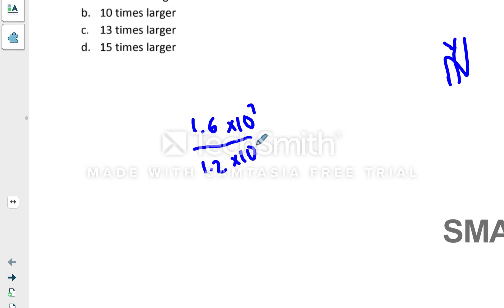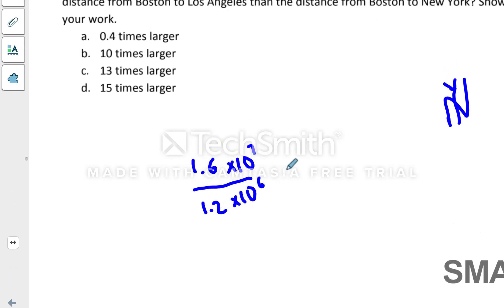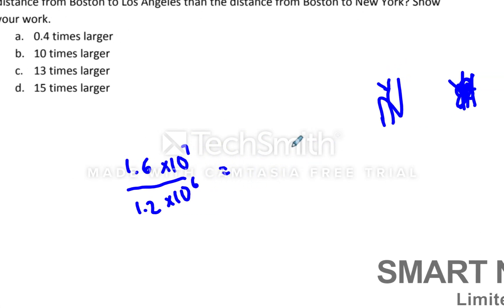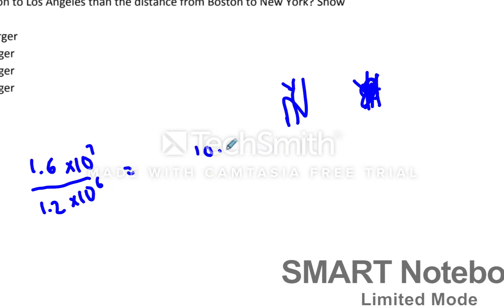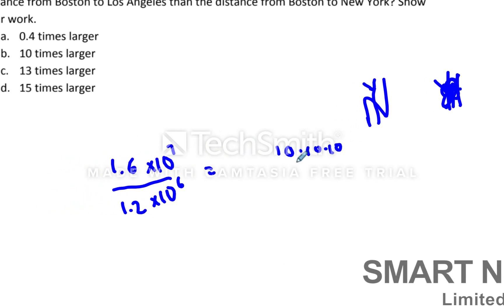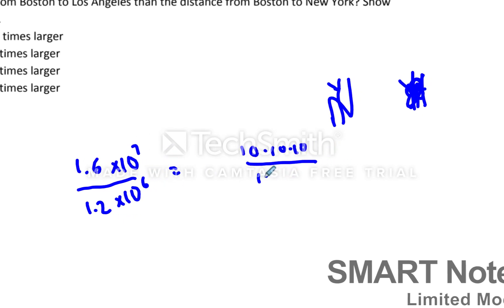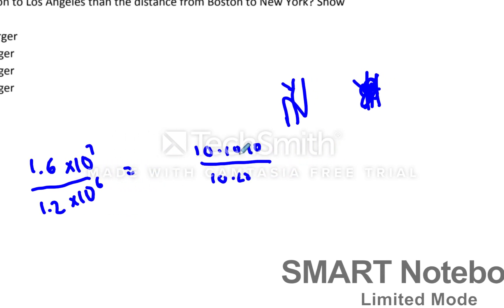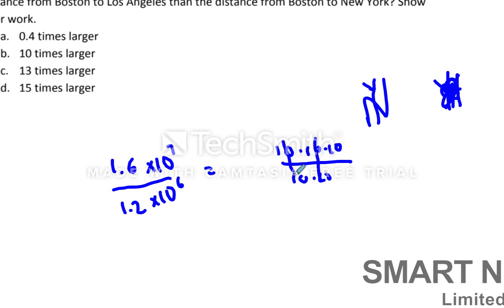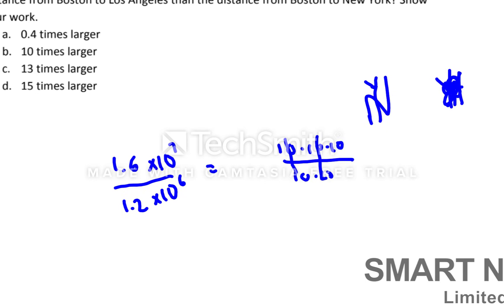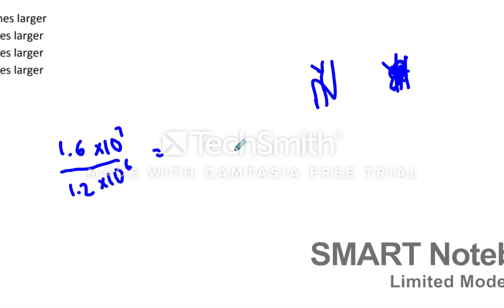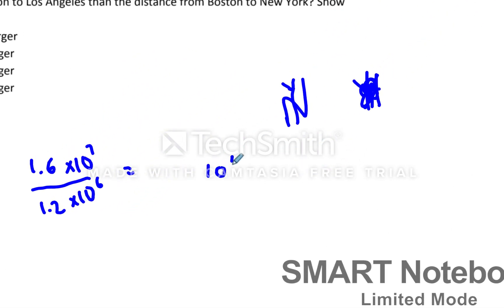We're going to end up doing 1.6 times 10 to the 7th divided by 1.2 times 10 to the 6th. And when you do this out, the 10s, if you were to do this out in expanded form, we saw this in a previous video, 10 times 10 times 10. I'm only going to do three of them. Let's pretend it said 10 to the 3rd over 10 times 10. What would happen is these 10s would cancel, and you'd be left with one 10 on the top because there's one more 10 on the top. So that'll be 10 to the 1st power.